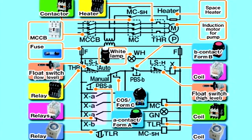This sequence circuit, controlling the level of the fuel oil settling tank within a set range, is comprised of various devices. Its high-level and low-level switches are B-contact types, allowing the relay to open when the float rises. Now let's take a step-by-step look at how the sequence circuit works.